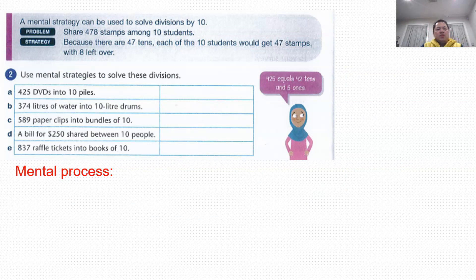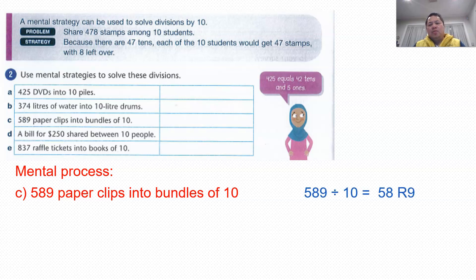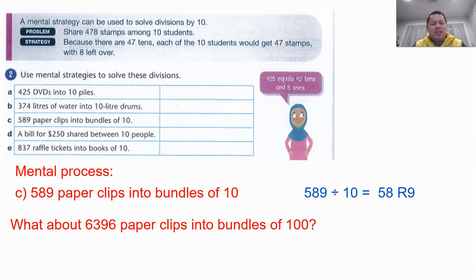Moving on. Let's say you're supposed to use mental strategy. So how do you go about doing that? In the mental process, let's say part C, 589 paperclips into bundle of 10. So how many bundles do you have? So with 589 divided by 10, straight away, I know that I will have 58 bundles. Because divided by 10, I just need to move back one decimal place, isn't it? And the remainder is 9. What about another one? This is not in the book. What about you have 6,396 paperclips into bundles of 100? So same thing, 6,396 divided by 100, you move two zeros back. So you have 63 bundles and remainder of 96. We're done.